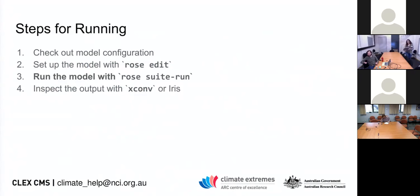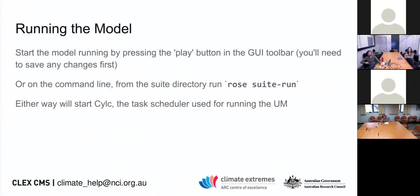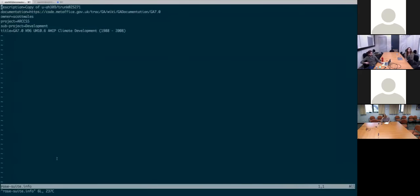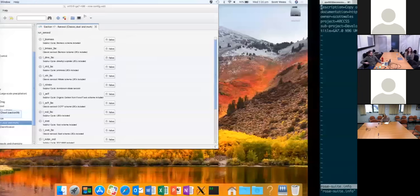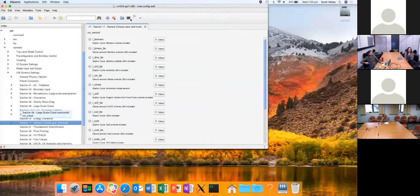So you've checked out a specific configuration, set up the model with Rose Edit to add output fields and so on. You can then run the model with 'rose suite-run'. There are two ways to do that: from the GUI you can just press the play button and that will start things running, or you can run 'rose suite-run' from the command line within the Rose directory.